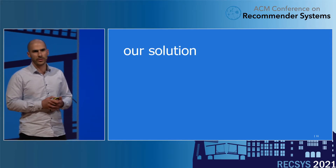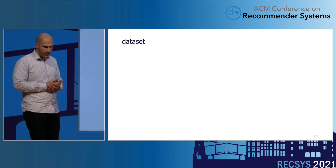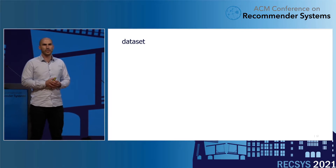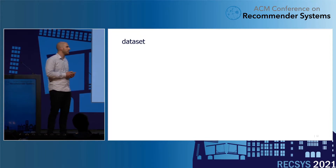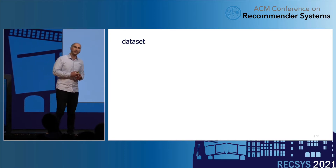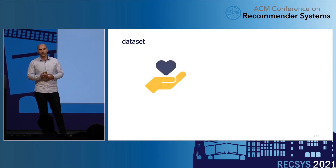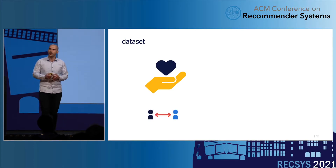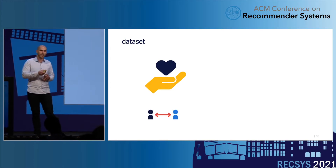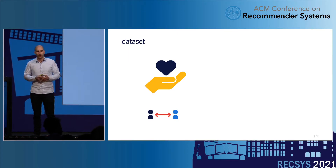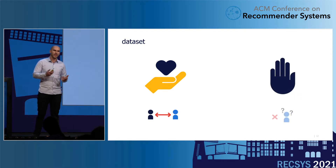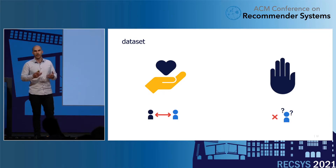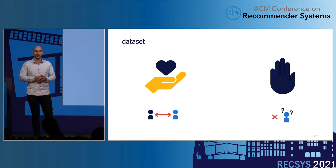Let's jump into the heart of our solution. First, regarding our dataset: we leveraged our insights and 60 years of experience as a company. We talked with our business stakeholders and identified two types of signals. The first is the positive signal — any kind of interaction between a recruiter and a talent, for example a phone call, an interview, or a job offer, is considered a positive signal. On the other side, we have the negative signal, which is the lack of that interaction — meaning a recruiter looked at a talent's profile but decided not to call and rejected it.